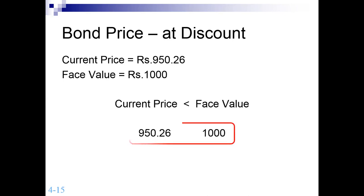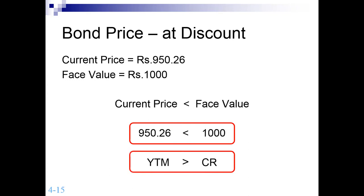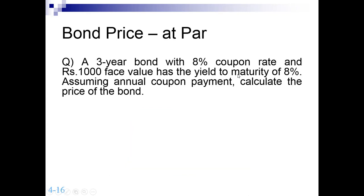For your reference, the calculated price is 950, which is less than 1,000. Under what condition does this happen? Whenever the investor's required return (YTM) is greater than the coupon rate, the bond will always remain in the market at a discount.